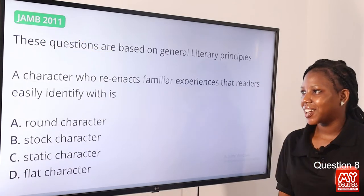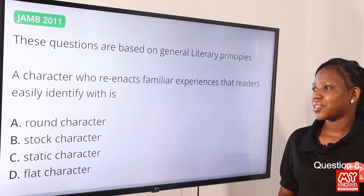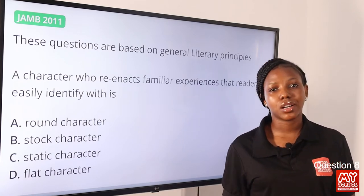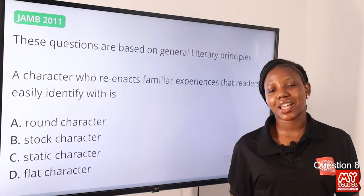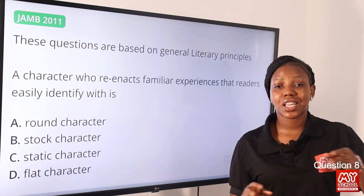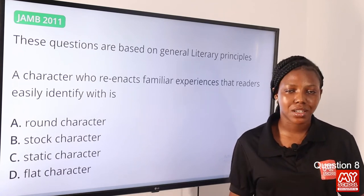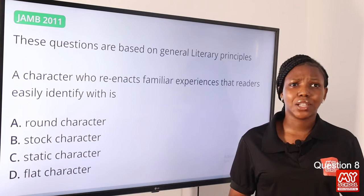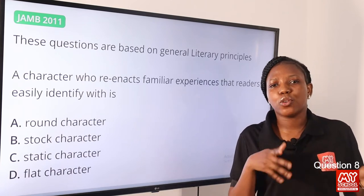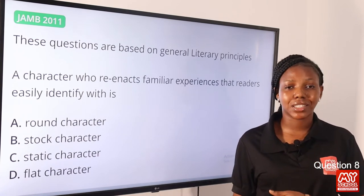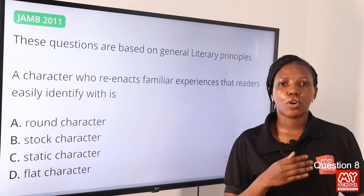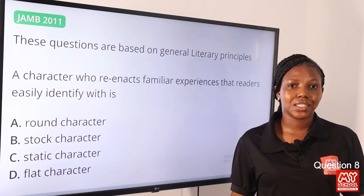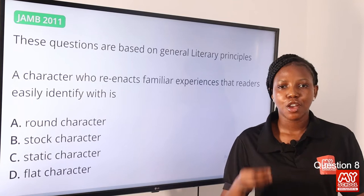Moving on to question 8. A character who reenacts familiar experiences that we easily identify with is dash. The answer is round character. A round character is well-rounded — fully developed in all aspects. We get to see all sides of this character: all of his personality, when he is happy, joyful, gentle, and kind, and also when he is angry, frustrated, nervous, or agitated. We can tell a lot more about the character, and we can easily identify with them.